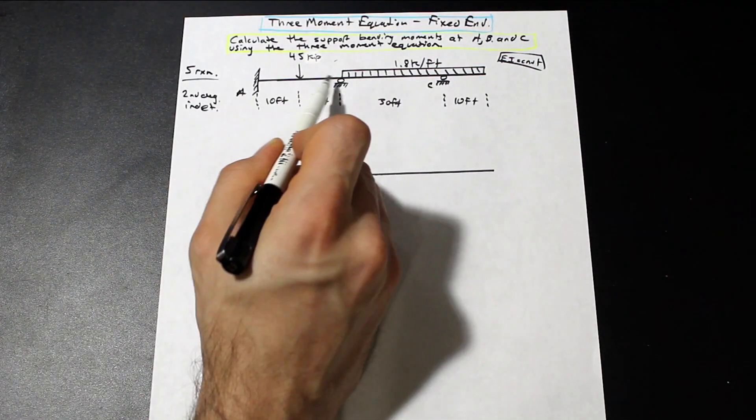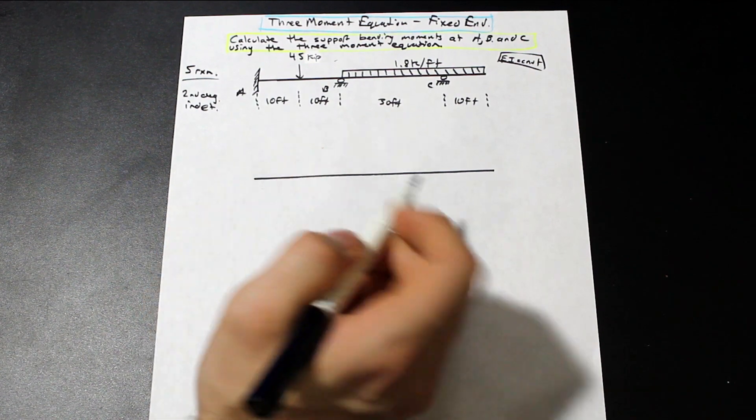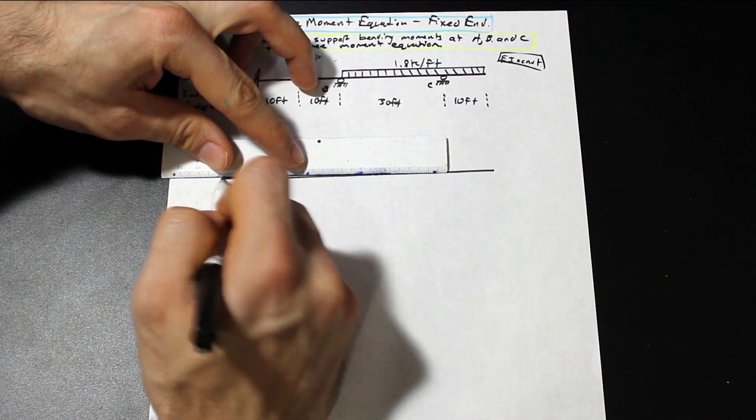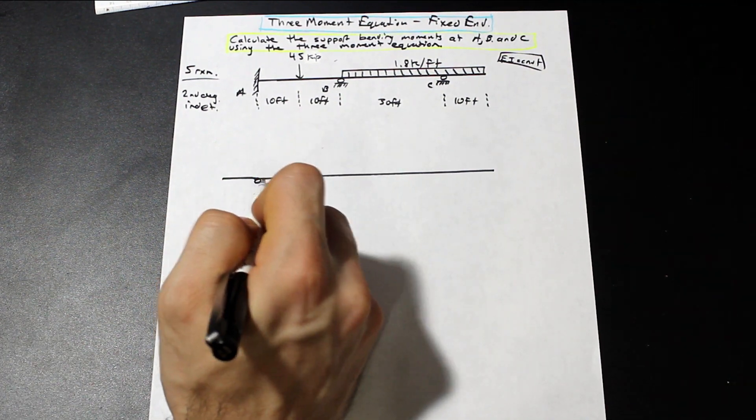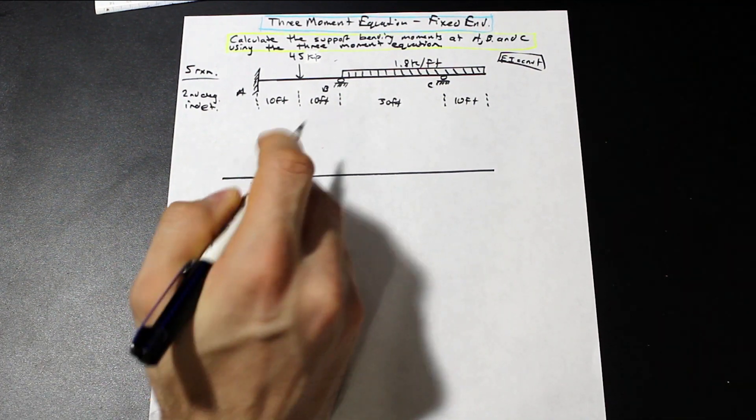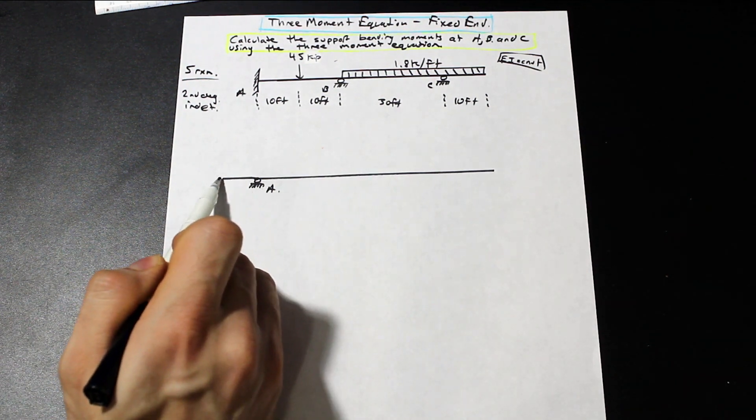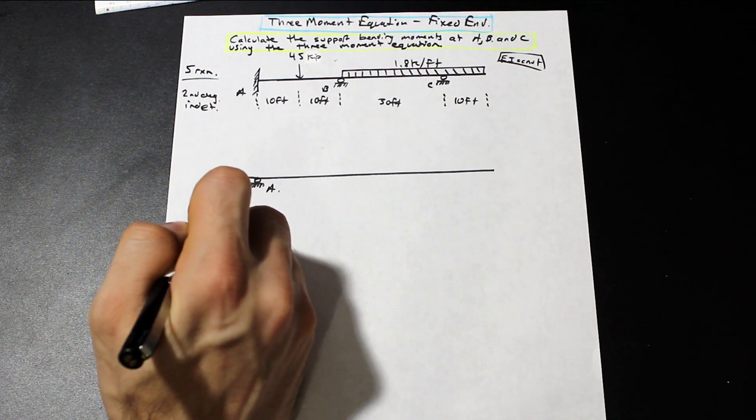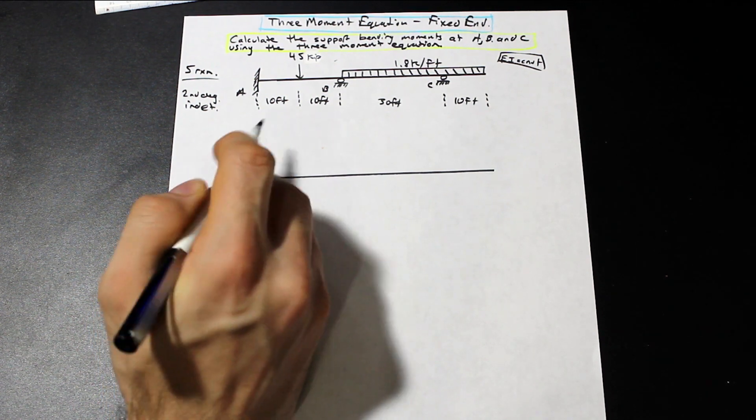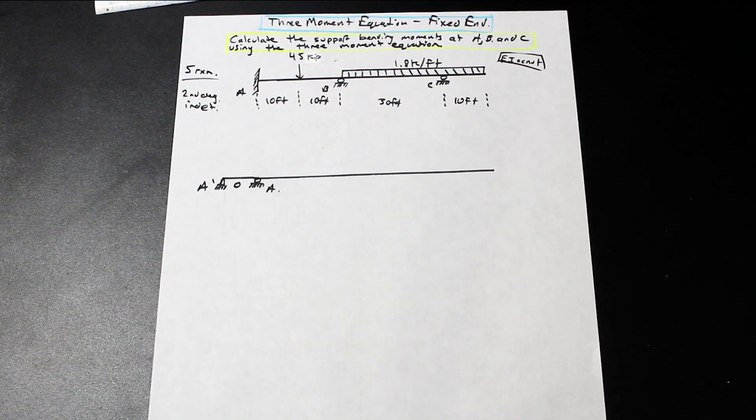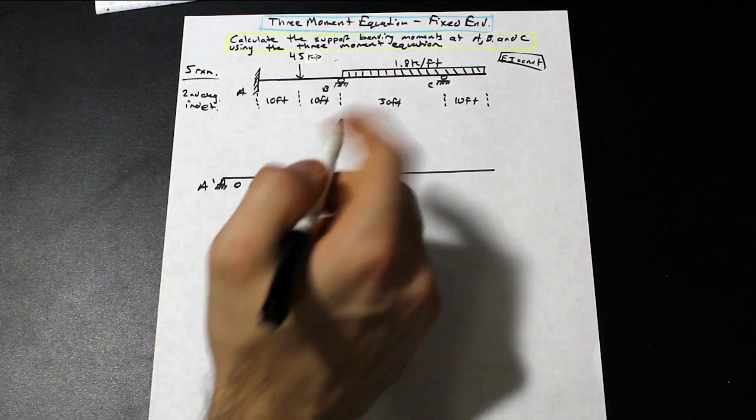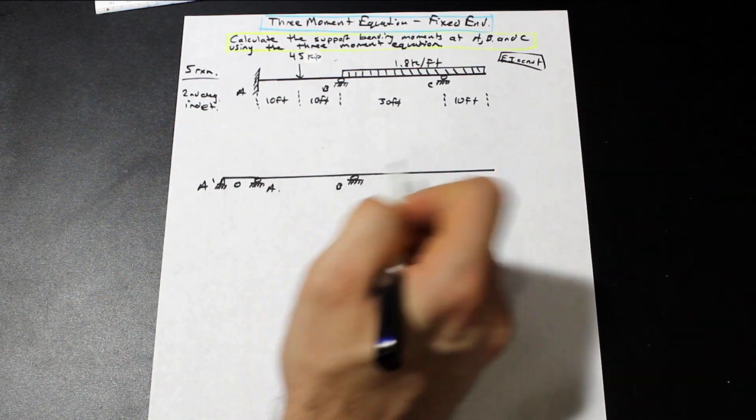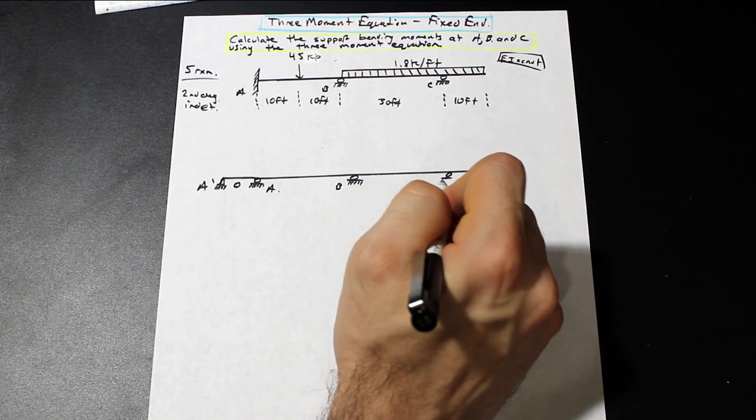A is still going to be a redundant and B is going to be a redundant. But what you do at A is we're just going to go ahead and extend A past A. And at A, we're going to turn that fixed into a roller. That's still going to be called A. And then we're going to extend the beam past A to an imaginary point of distance zero, and that is going to become a pin. And we're going to call that A prime.